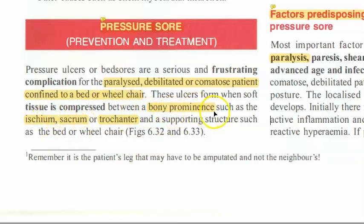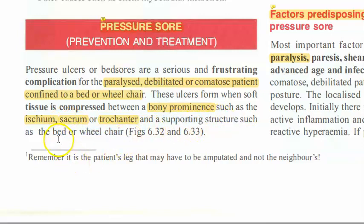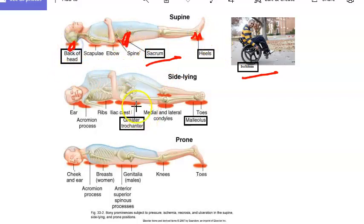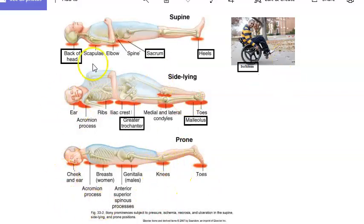The sore tissue is compressed between the bony prominence and a supporting structure such as a bed or wheelchair. The bed is supposed to be soft, yet the pressure is enough to cause a bed sore. Bony prominences commonly affected include the ischium (when sitting), sacrum, heel, back of the head, greater trochanter (when lying lateral), and the lateral malleolus.